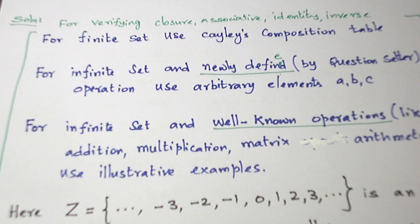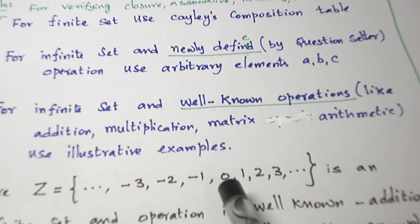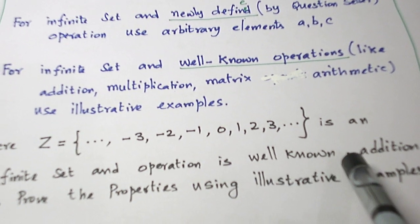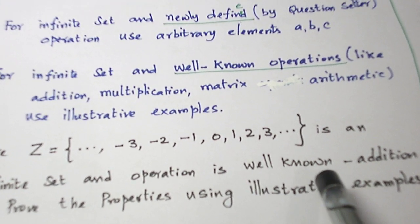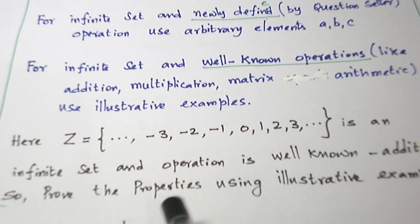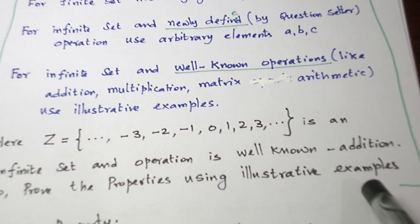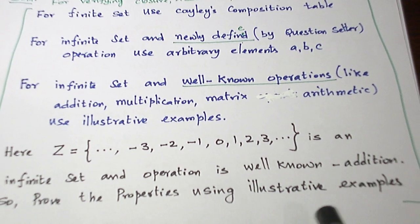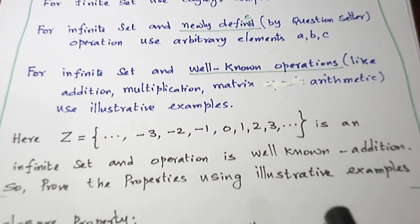In this problem, the set is an infinite set and the operation is usual addition, which is well-known. So we are going to prove the properties using illustrative examples. Actually we are not going to prove, just we are going to see some examples for each of these properties.